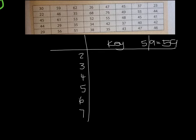Now I'm going to start organizing these numbers. Look at your first number. Your first number is 30. So you put it in. Your second number is 59. So you put your 9 here. Your next number is 62. So you put it there. Your next number is 26. You put it there. 47. You put it there. 45. Put it there. 37. Put it there. 23. Put it there. 22. Put it there.